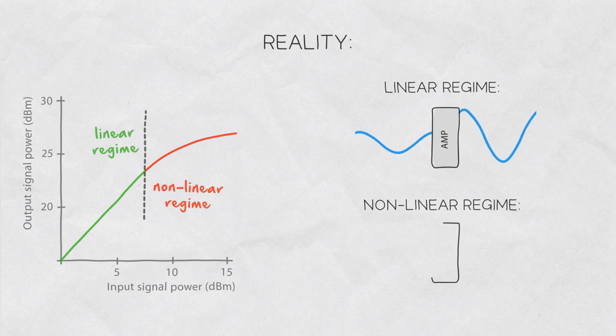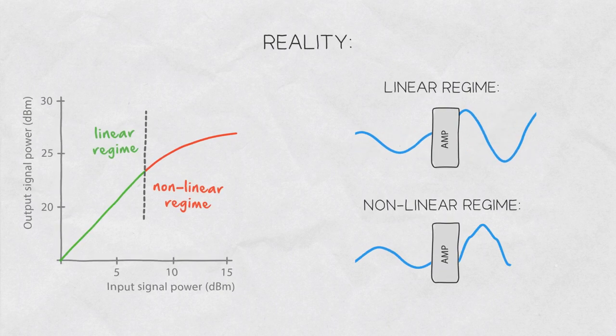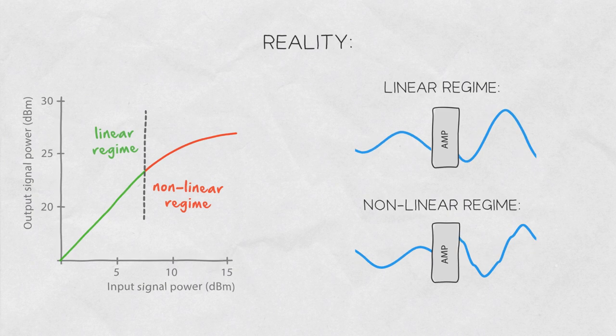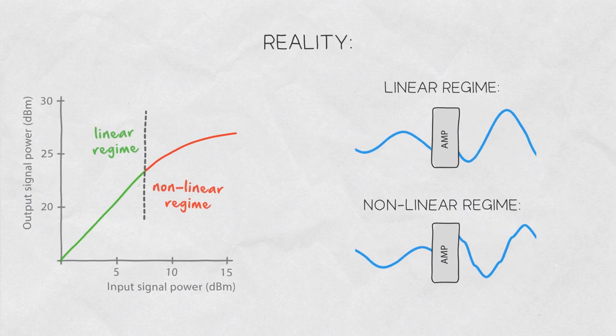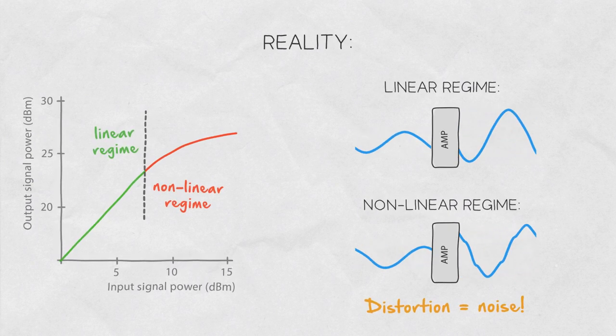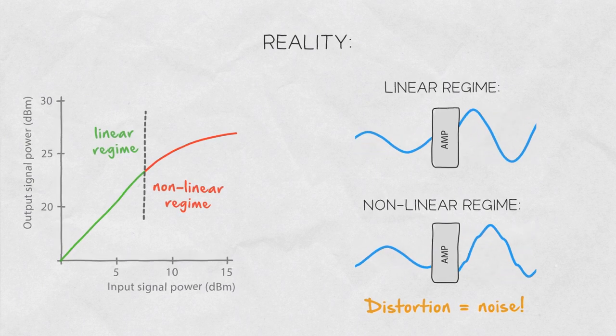So if the input signal power lies in the non-linear part of the curve the output signal is still amplified but its shape will be distorted. This distortion can be viewed as a form of noise added to the signal.